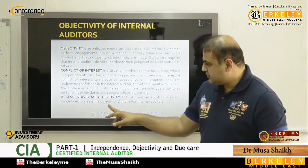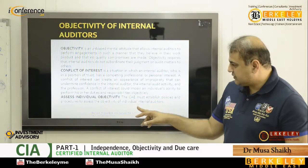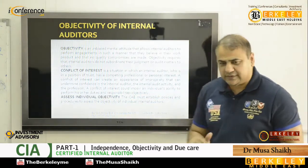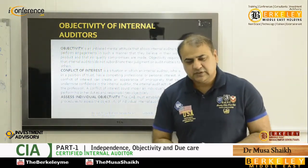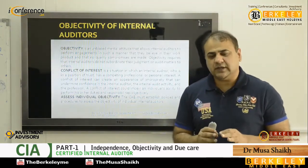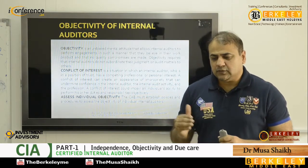The CAE must maintain policies and procedures to support the objectivity of individual internal auditors. Smart internal audit management ensures auditors are rotated and checked — similar to how armed forces and security agencies create special units to investigate their own officers, providing double checks that create efficiency, transparency, and objectivity.